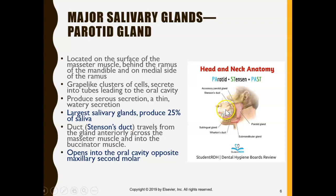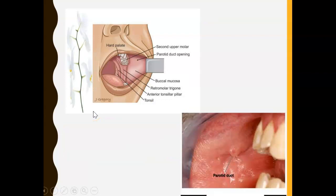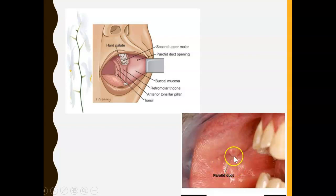The parotid gland has a duct known as Stenson's duct. It is the largest salivary gland but only produces 25% of saliva. It opens right opposite the maxillary second molar. It has a serous secretion, meaning the saliva that comes out is thin and watery. If you pull out your inner cheek, right opposite the second molar you'll see the parotid duct — it looks like a bump where the saliva comes out.